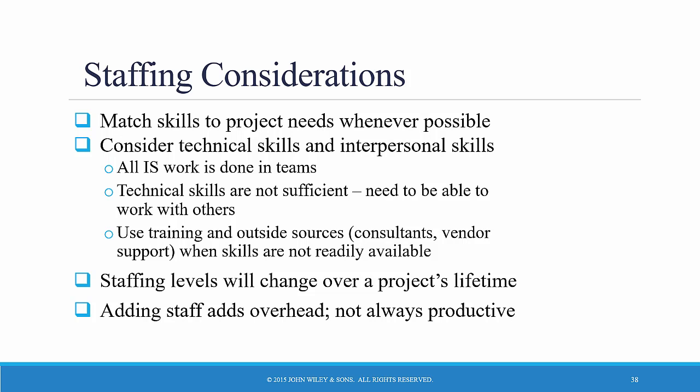Once the project manager understands the optimum number of people for the entire project, he or she can create a staffing plan that lists the roles required for the project and the proposed reporting structure. You need a balance of technical people — programmers, database designers, and that sort of thing — and business analysts who better understand the business requirements of the system. You don't want a completely technical team, but you certainly do need some technical people on it.